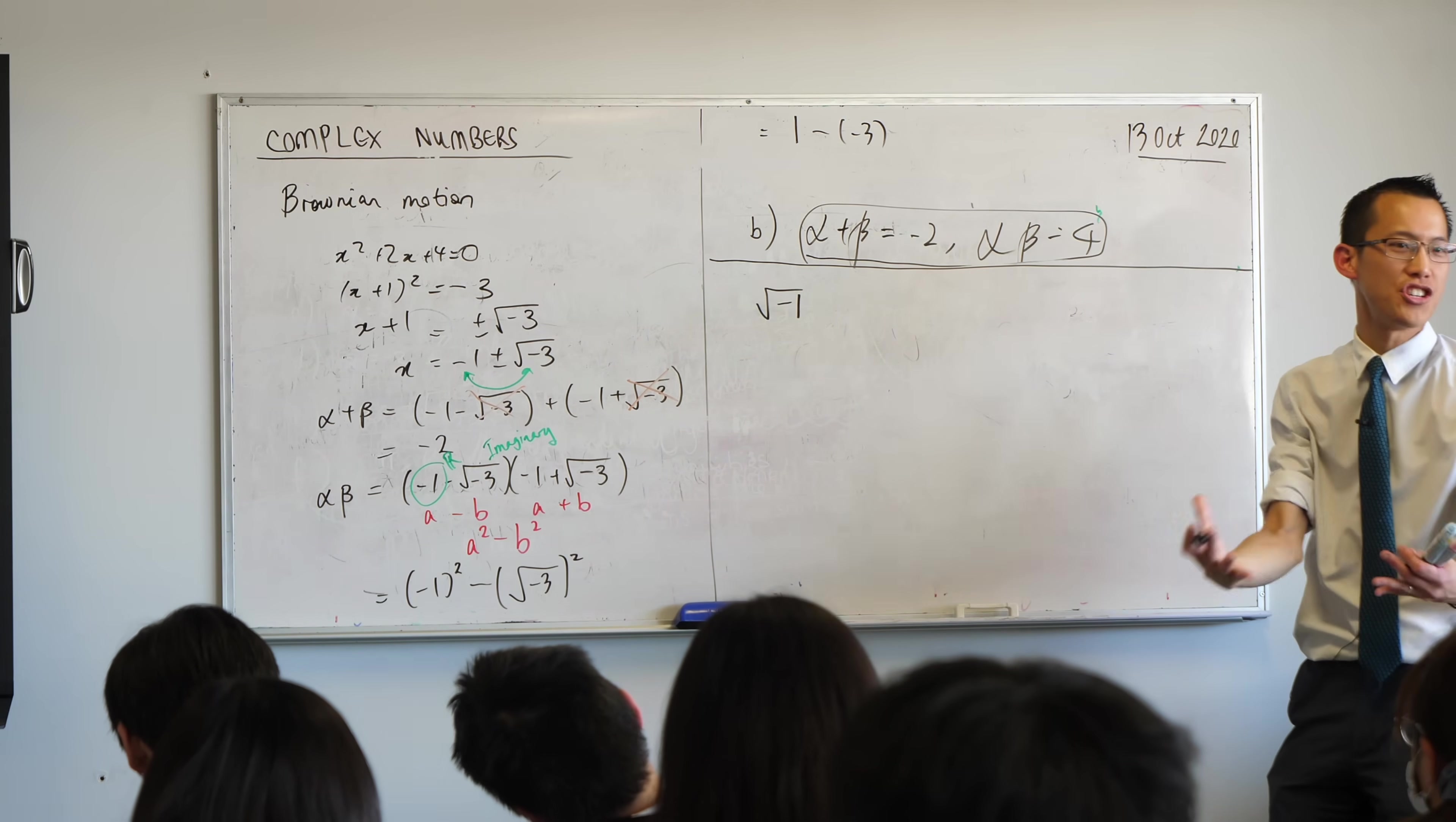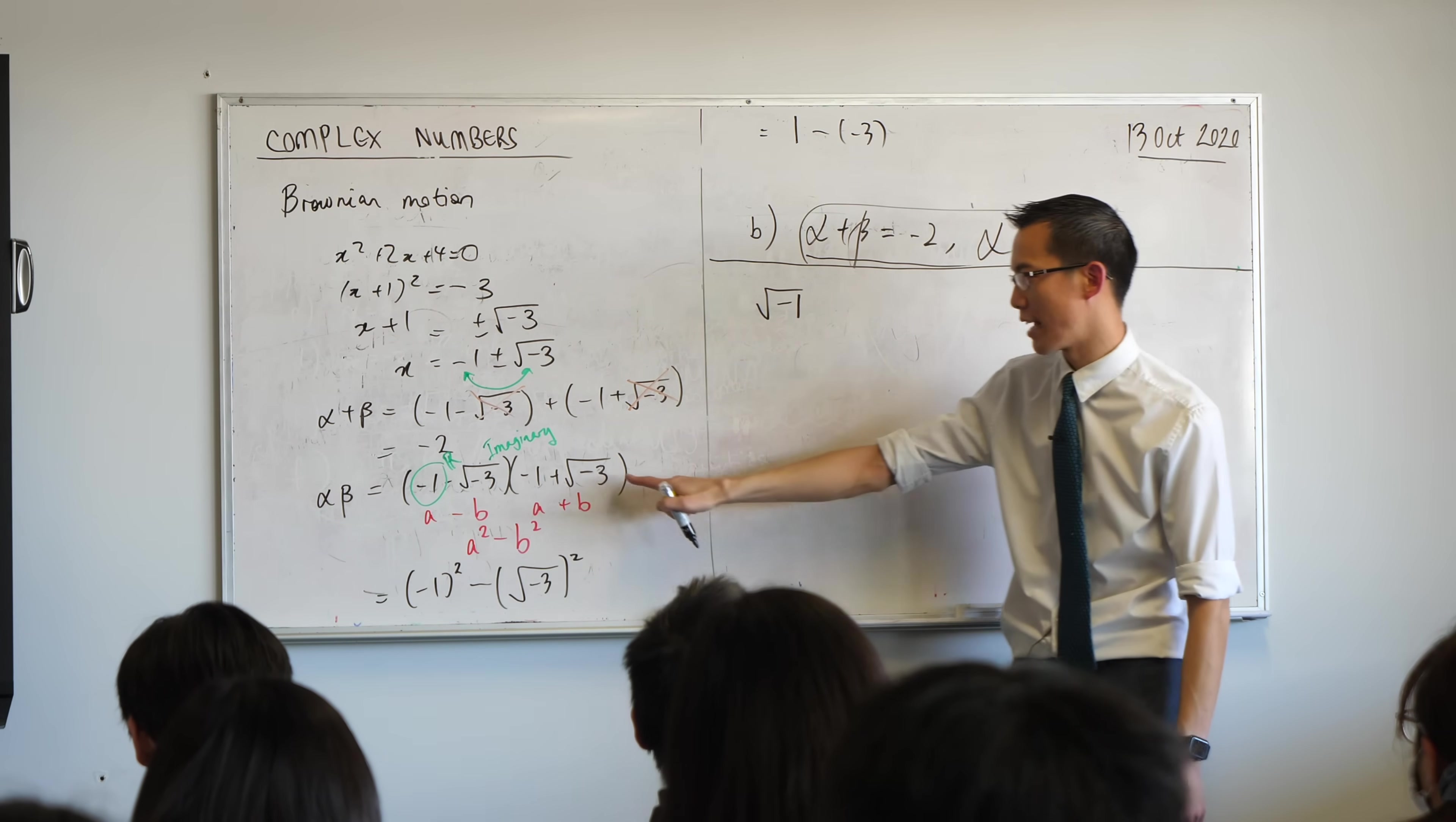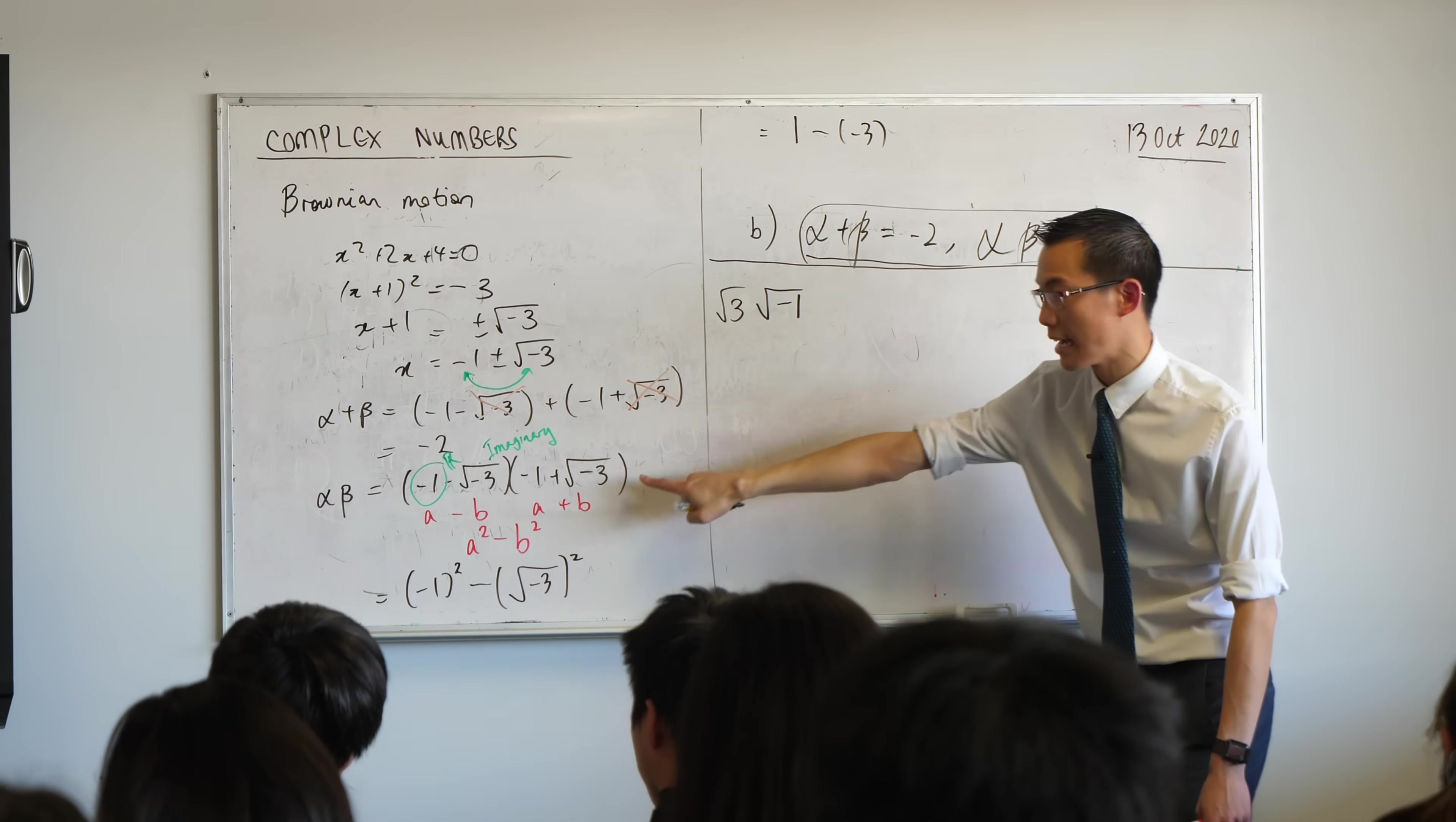We call this the imaginary unit. Every other imaginary number is made up of these guys, right? For example, to get square root of negative 3, you multiply this by the square root of 3. Do you agree? If I did this, I'd get that.